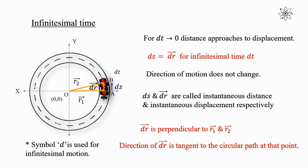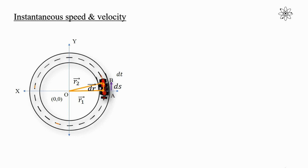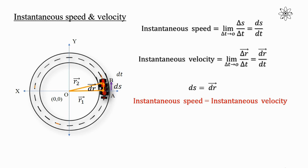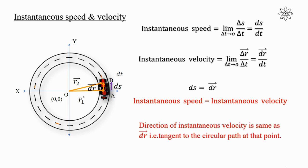Using instantaneous distance and displacement, we can write formulas for instantaneous speed and instantaneous velocity. Instantaneous speed equals the limit of average speed as delta t tends to zero. Similarly, instantaneous velocity equals the limit of average velocity as delta t tends to zero, which equals vector dr divided by dt. Since for instantaneous motion distance equals displacement, instantaneous speed equals instantaneous velocity.